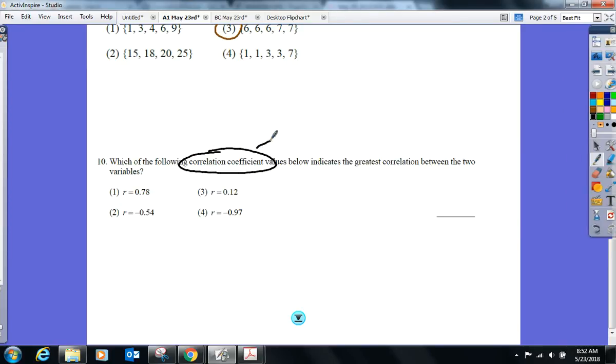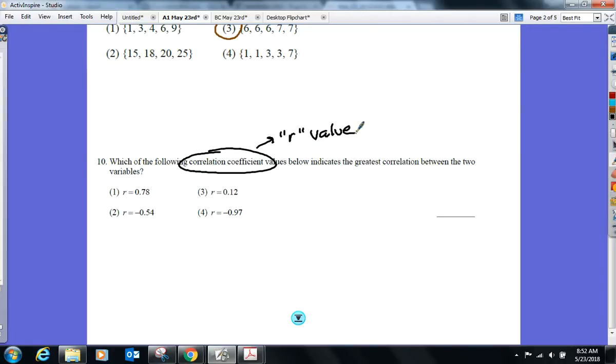That's what our R value is. So we do a linear regression, it'll have an R value. Exponential will have an R value. The greatest correlation between the two variables. What do R values range from? Negative one to positive one. Anything close to either two is strong correlation. I don't care if it's negative or positive. Any number closer to either one is strong correlation. So out of these four choices here, which one's got the greatest correlation between the two?